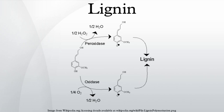Lignin fills the spaces in the cell wall between cellulose, hemicellulose, and pectin components, especially in xylem tracheids, vessel elements, and sclereid cells. It is covalently linked to hemicellulose and therefore cross-links different plant polysaccharides, conferring mechanical strength to the cell wall and by extension the plant as a whole.